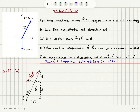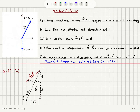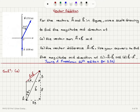Vector addition. For vectors a and b in the figure, a has a magnitude of 8 meters pointing in the minus j-hat direction, and b has a magnitude of 15 meters making an angle of 30 degrees with respect to the positive y-axis. Use a scale drawing to find the magnitude and direction of the vector sum a plus b, the vector difference a minus b, and also minus a minus b and b minus a.